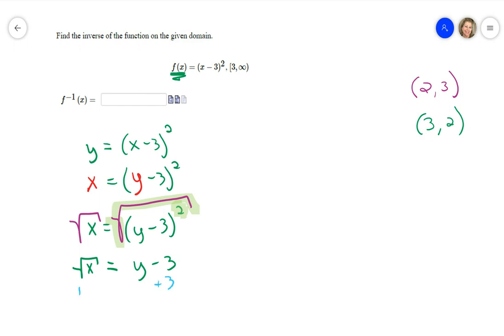That cancels out there, and so over here you're going to have the square root of X plus 3 is equal to Y. Now a lot of people like to write it as 3 plus the square root of X so that they don't accidentally put the 3 under the radical. It doesn't matter which way you write it.